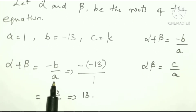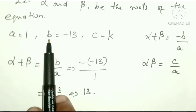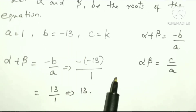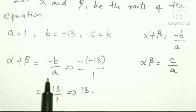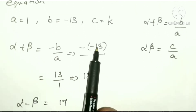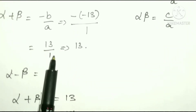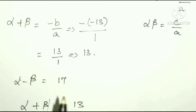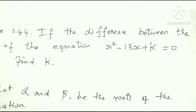For the sum of the roots, we use minus b by a. Since b is minus 13, it becomes minus of minus 13 over 1, which is plus 13 over 1, which equals 13. So alpha plus beta equals 13.